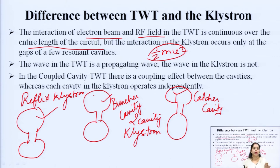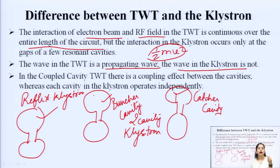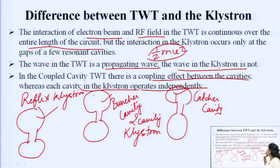These are the only places in the case of a klystron where the RF signal interacts with the electron. But in the case of the TWT, the interaction between the RF signal and the electron beam occurs throughout the entire length of the circuit. This is one of the major differences between the TWT and the klystron. The wave in the TWT is a propagating wave, but the wave in the klystron is not. TWT has basically two types: the coupled cavity TWT and the slow wave structure TWT.